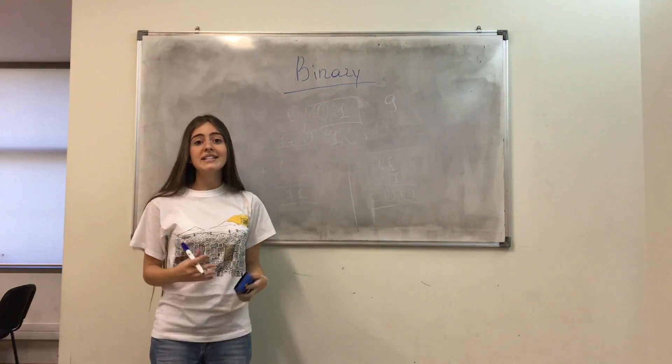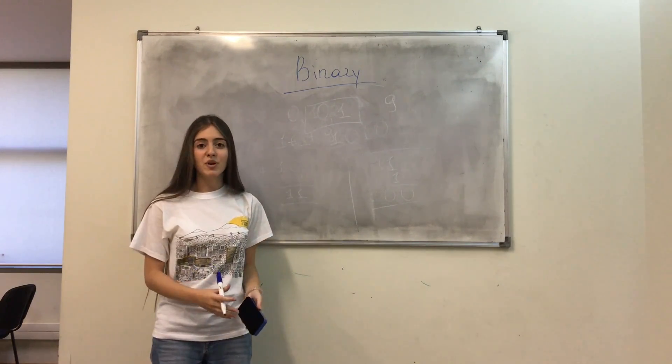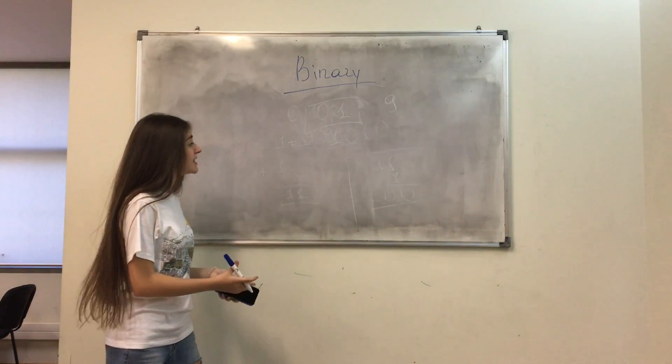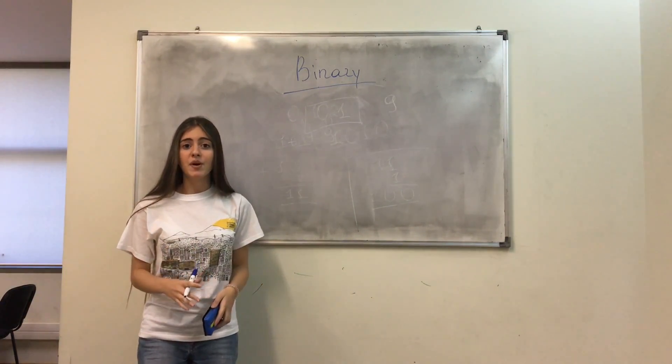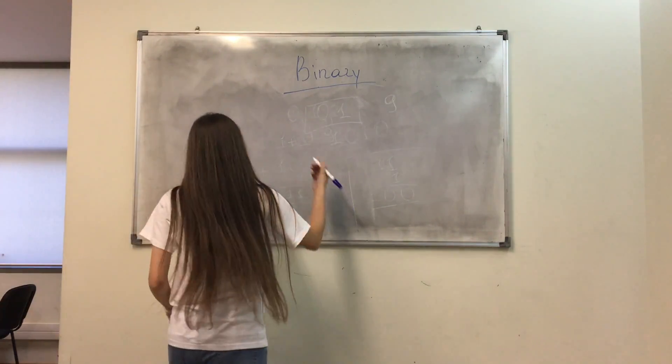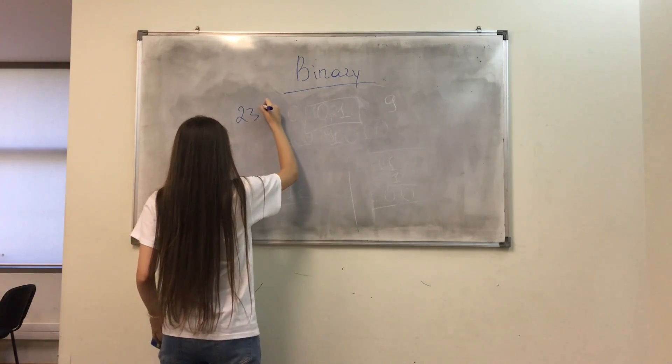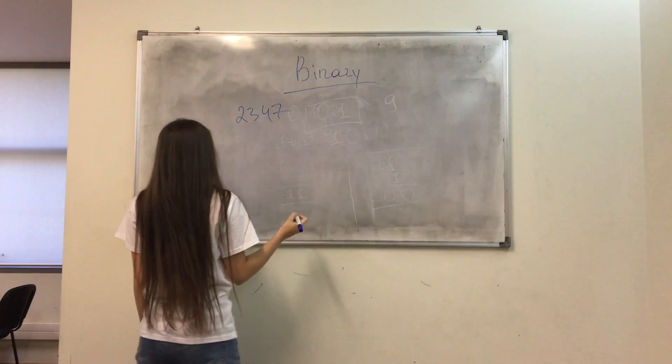Now let's see how binary numbers transform to decimal numbers. But at first, let's analyze a decimal number with a base of 10. Let's take, for example, 2347 and analyze it.